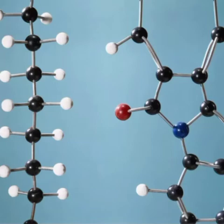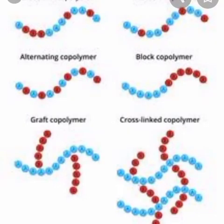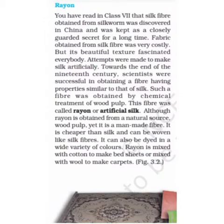Monomers are joining together and become a large molecule. Here you can see monomers are joining in different fashions, resulting in the formation of polymers.